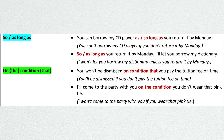'So long as' or 'as long as' and 'on condition that' are very similar to 'providing that.' Look at the examples: 'You can borrow my CD player as long as / so long as you return it by Monday.' You can't borrow it if you don't return it by Monday. 'So long as you return it by Monday, I'll let you borrow my dictionary.' This means I won't let you borrow my dictionary unless you return it by Monday. 'You won't be dismissed on condition that you pay the tuition fee on time' — that is the only way you won't be dismissed. 'I'll come to the party with you on the condition you don't wear that pink tie.' This means I won't come with you if you wear that pink tie — my condition is that you don't wear that pink tie.